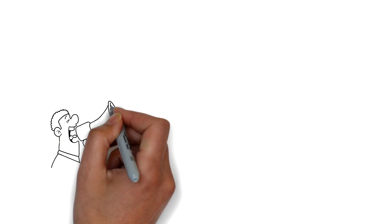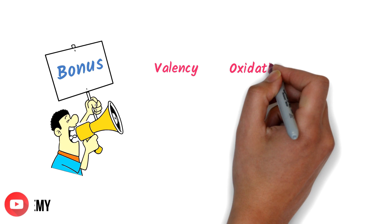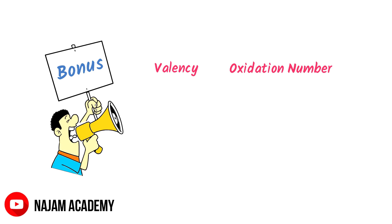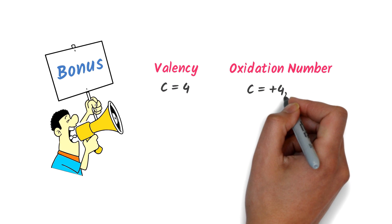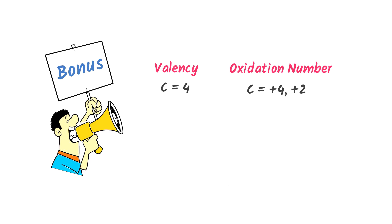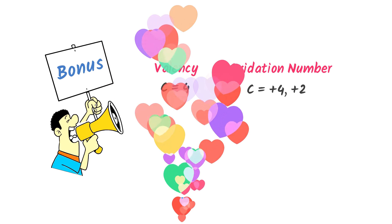Here is one last bonus tip for you. Remember that valency is totally different from oxidation state or oxidation number. For example, the valency of carbon is 4, while the oxidation number of carbon may be positive 4 or positive 2 in different compounds.